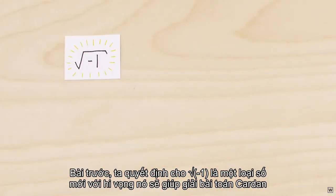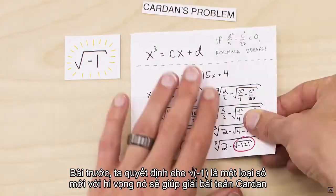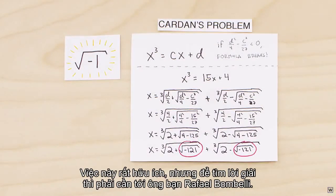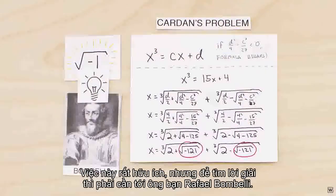Last time we decided to let the square root of minus one be its own new type of number, hoping it would help us solve Cardano's problem. Doing so is helpful, but finding a solution requires one more insight from our friend, Raphael Bombelli.